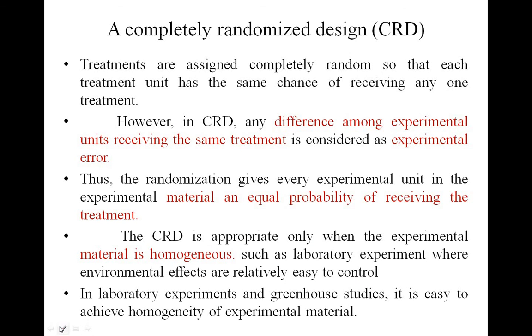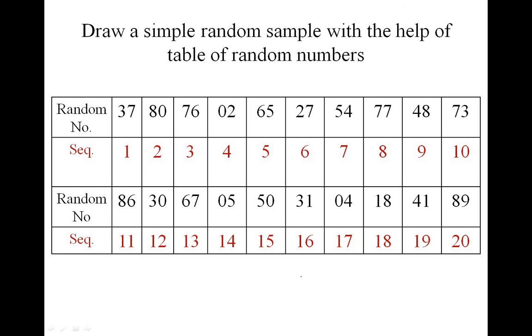Completely randomized design is useful for laboratory experiments where material is homogeneous and each unit receives the same treatment. We can use this type of experiment in lab as well as greenhouse studies, where environmental effects are easy to control.